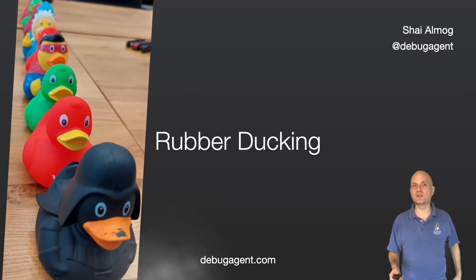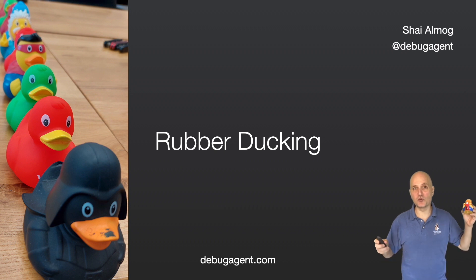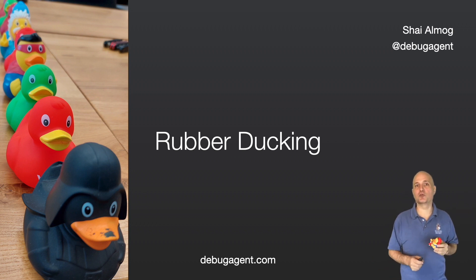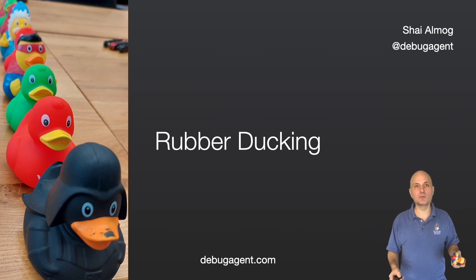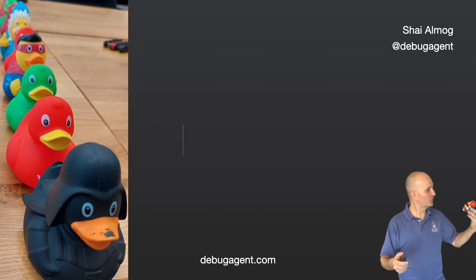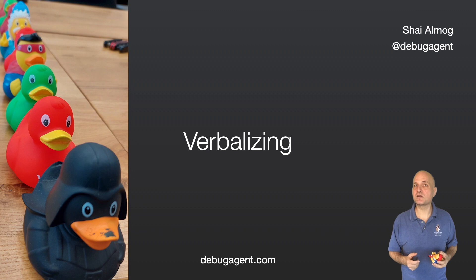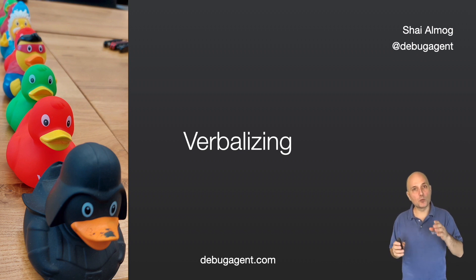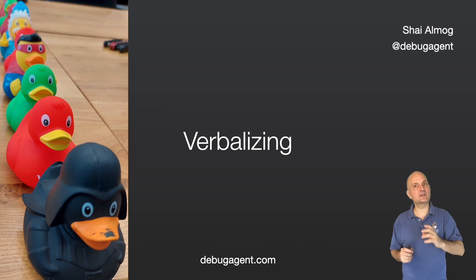The term rubber ducking originates with a developer who supposedly brought a rubber duck to talk to when facing an issue. This illustrates a common developer observation: when we consult a colleague, we often find the problem before the person we're talking to says a word. Verbalizing the problem often forces us to pay attention to nuance that we sometimes gloss over. This works even when talking to an inanimate object, and even when running this exercise in your head, although it's not as effective for some.